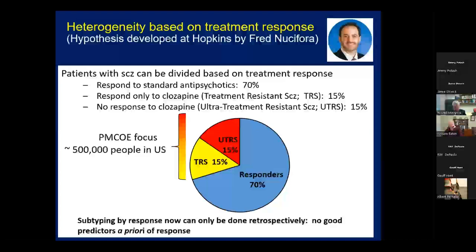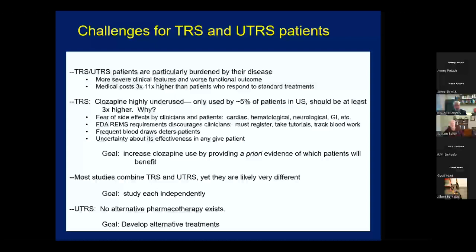At this point, we can't subtype between these three different groups prospectively — only retrospectively. We don't have good a priori predictors of response. This is important because patients who are treatment-resistant and ultra-treatment-resistant present unique challenges. These individuals are particularly burdened by their disease, with the most severe clinical features and the worst functional outcome. Their costs are many-fold higher than patients who respond to standard treatments, due to increased hospitalizations, increased need for support services, and the like.